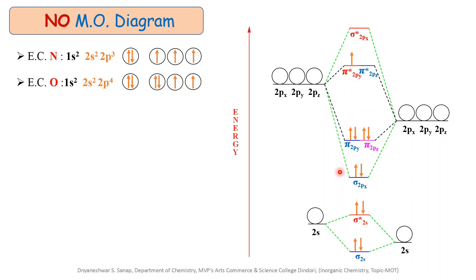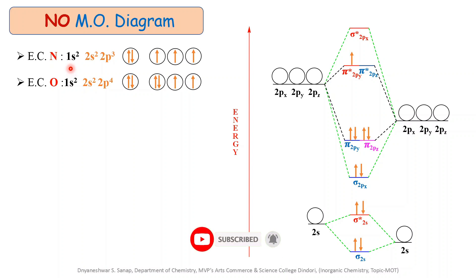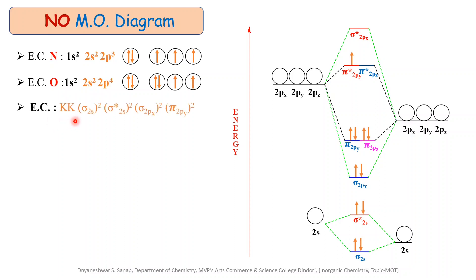The next important point is writing the electronic configuration for the molecular orbital in increasing order of energy. Before writing it, we must note that the 1s orbital for both nitrogen and oxygen does not participate in bonding, and we represent these with KK. The resultant electronic configuration is: KK, σ2s², σ*2s², σ2px², π2py² (degenerate with π2pz²), π*2py¹, π*2pz⁰.